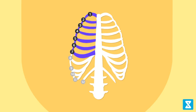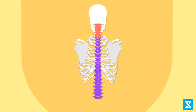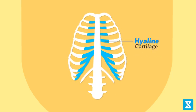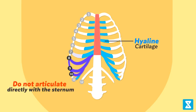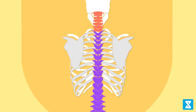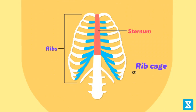The first seven pairs of ribs are known as true ribs — dorsally attached to the thoracic vertebrae and ventrally connected to the sternum with the help of hyaline cartilage. The eighth, ninth, and tenth pairs do not articulate directly with the sternum but join the seventh rib with hyaline cartilage; these are called vertebrochondral or false ribs. The last two pairs, the 11th and 12th, are not connected ventrally and are therefore called floating ribs.